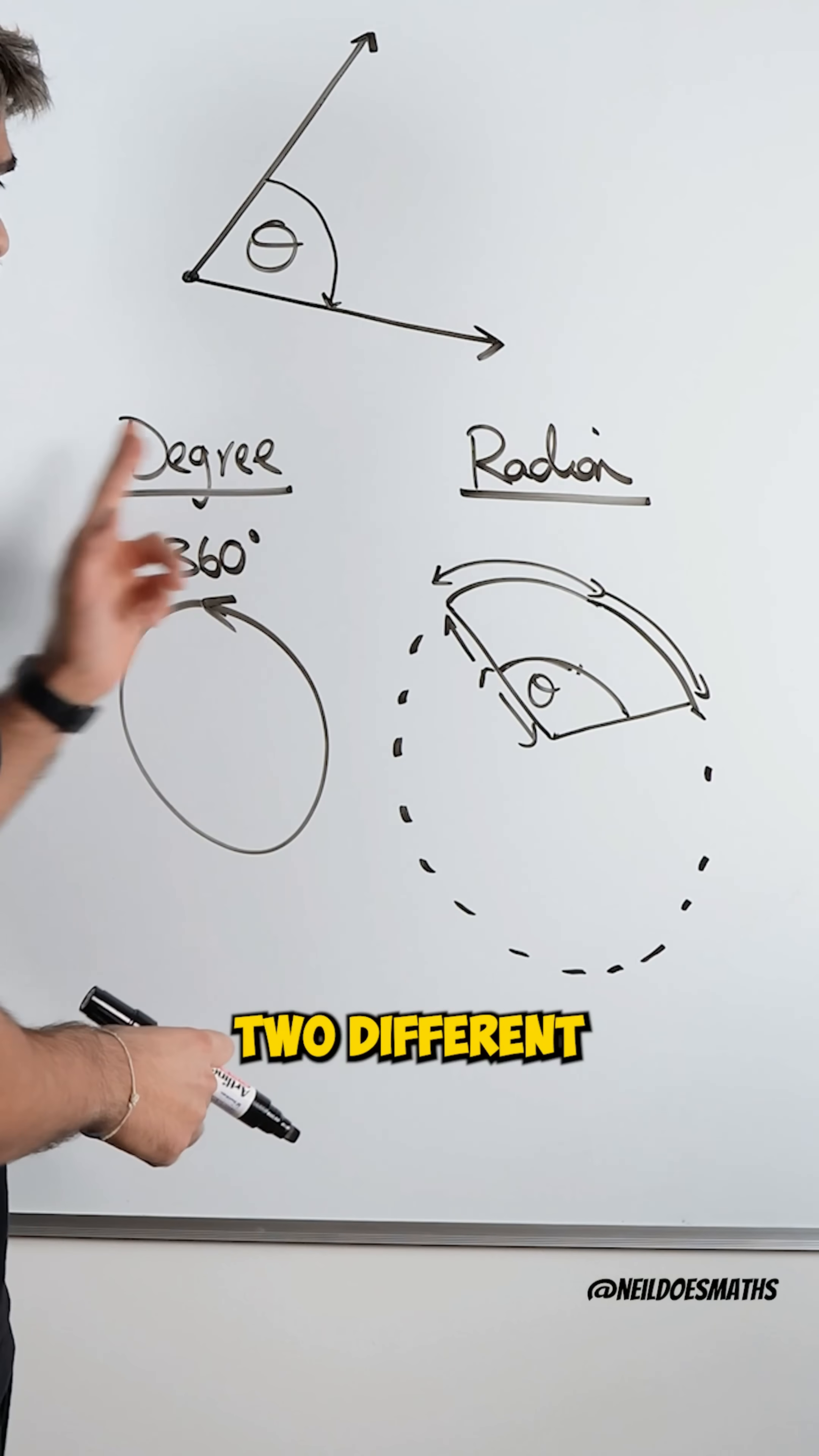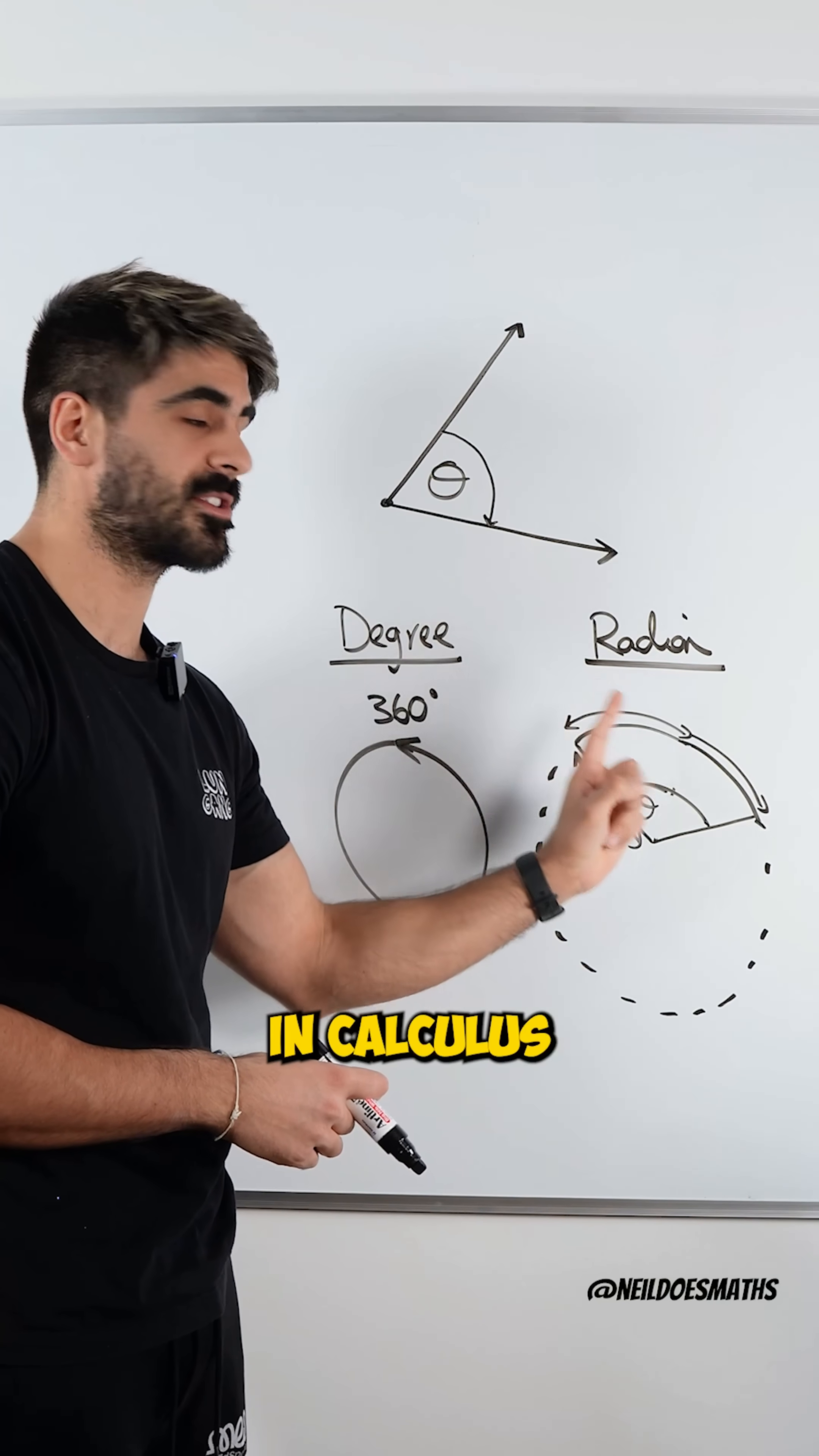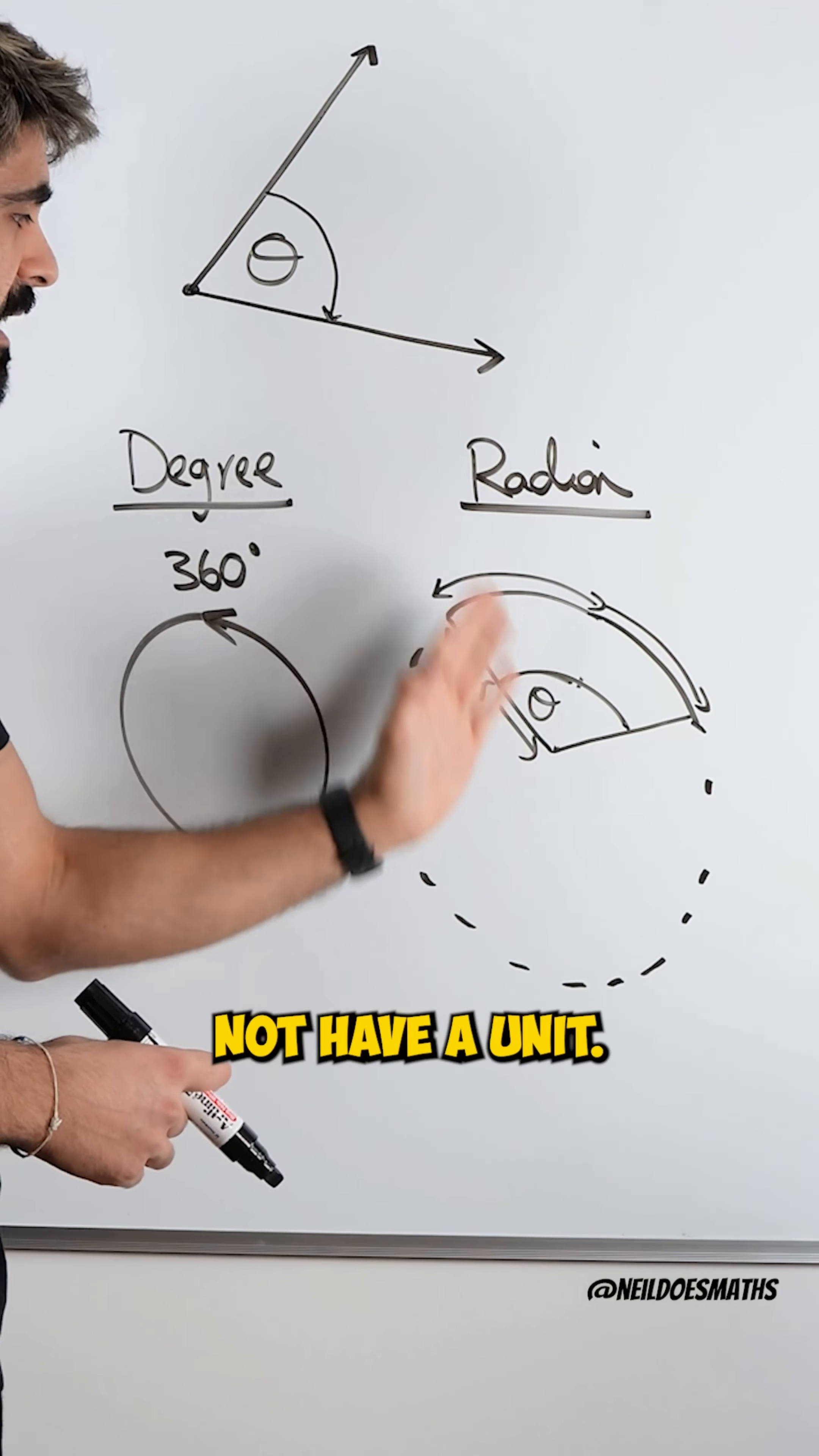So these are the two different types of measurement. And radian is the most important one because we use it in calculus as it does not have a unit.